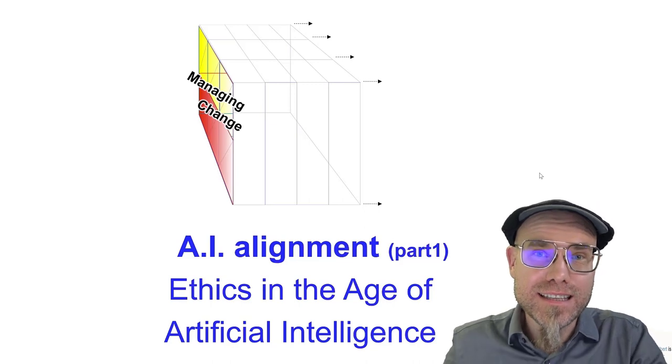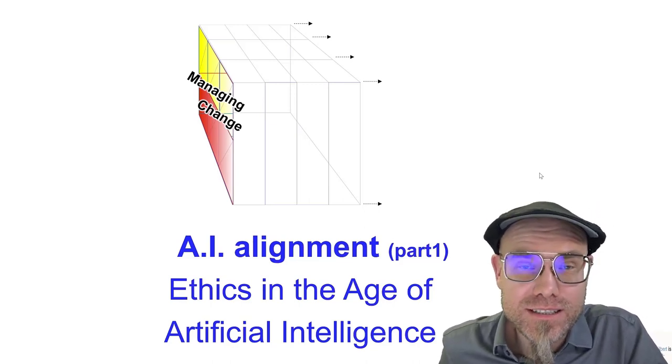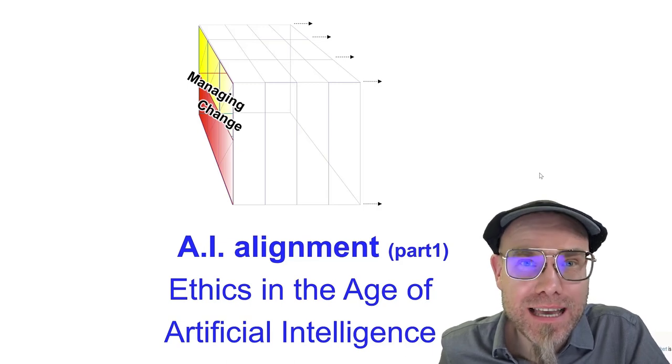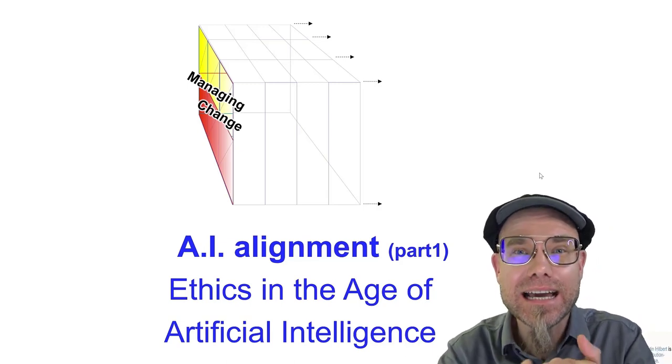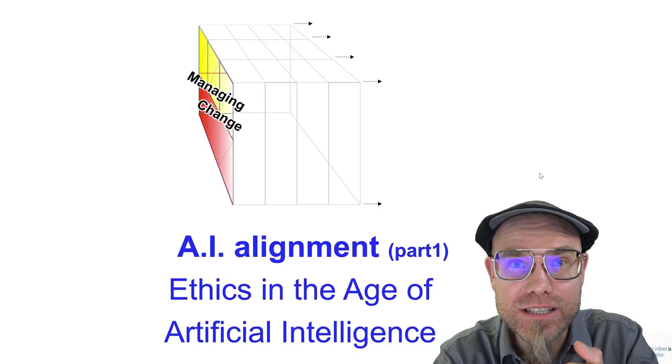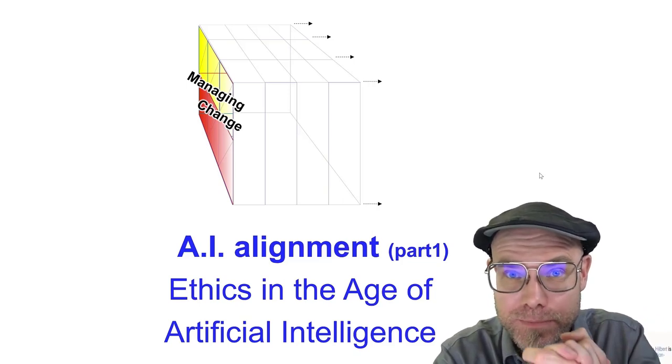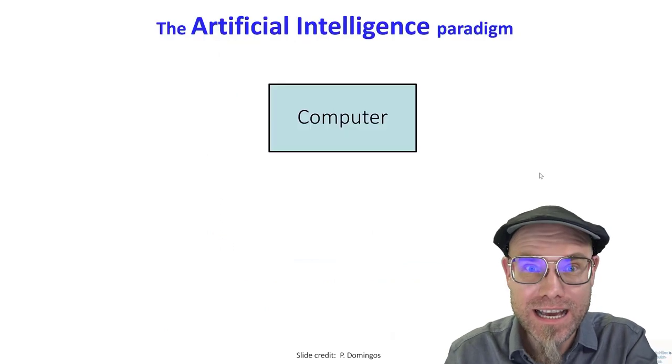The question of ethics in the age of artificial intelligence is currently carried out under the umbrella term AI alignment. How can we align artificial intelligence with our human values and norms? That's what we're going to look at right now.